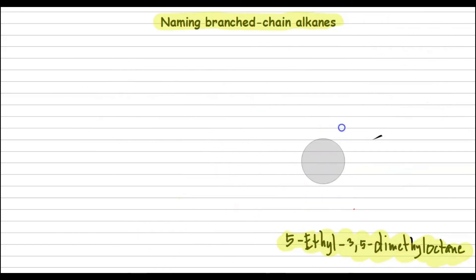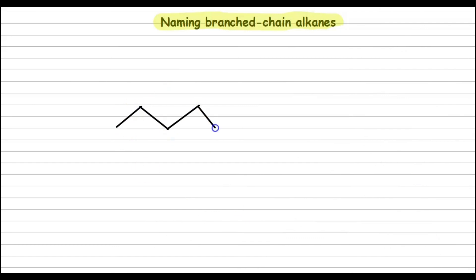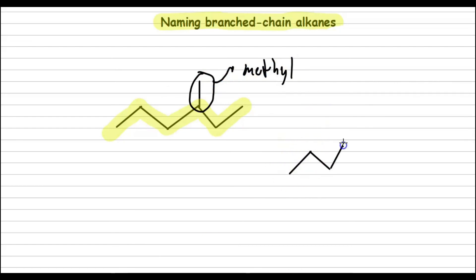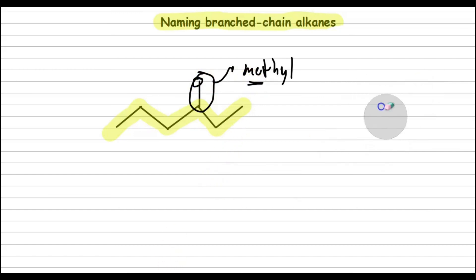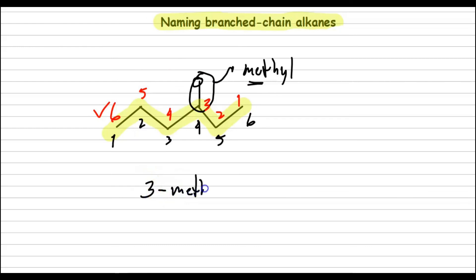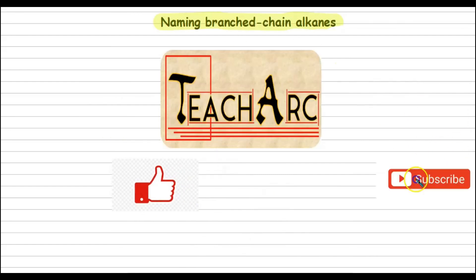How about when the hydrocarbon is represented as a line-angle formula? We still need to find the parent hydrocarbon — in this example we have 6 carbons, so that is hexane. The line not part of the parent hydrocarbon is the substituent: one line represents methyl, two lines represent ethyl, and so on. We still find the sequence that gives the branch the smallest number — for this example, it is right to left. So the name of this hydrocarbon is 3-methylhexane. And that's it for this video — happy solving!